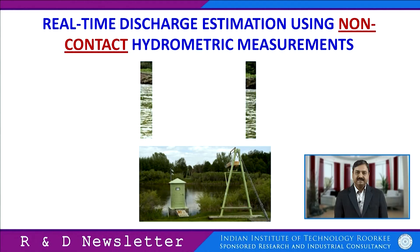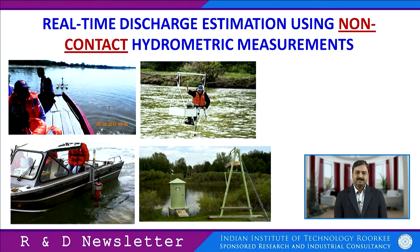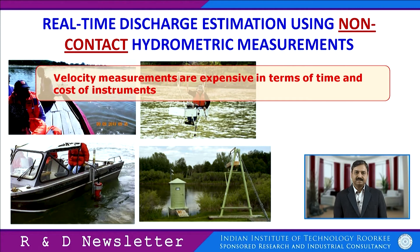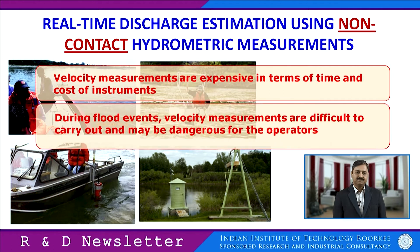Real-time estimation of discharge is needed for operation of dams and planning and management of water resource structures. Currently in India, the Central Water Commission is maintaining around 900 gauging stations, and these stations are using conventional methods like the current meter method or boat method by ADCP. In these methods, velocity measurement is time-consuming and costly, and during flood events it is difficult to measure velocity and it endangers the operator's life. Also, during night time the measurement of discharge is not possible.